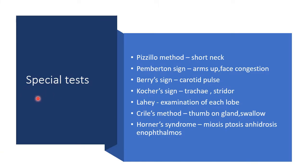The special tests for thyroid lumps or goiter include: the Pizzilos method for short necks; Pemberton's sign, where raising the arms causes facial congestion; Berry's sign, involving the carotid pulse; Kocher's sign, where pressure on the trachea leads to stridor; Lehi's method to examine each individual lobe; Crile's method where small lumps are palpated using pressure on the gland; and Horner's syndrome, which includes miosis, ptosis, anhydrosis, and enophthalmos.